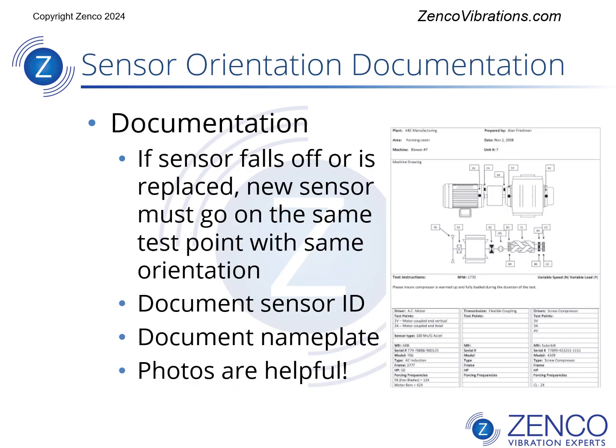It's good to record the sensor position on a machine test form. If a sensor falls off or it's replaced, the new sensor has to go in the same place with the same orientation. If you're doing a walk-around program, this would tell the person taking the reading exactly where to take it and how to orient the sensor. Not only that, you can document nameplate information on this, and photos are always helpful.